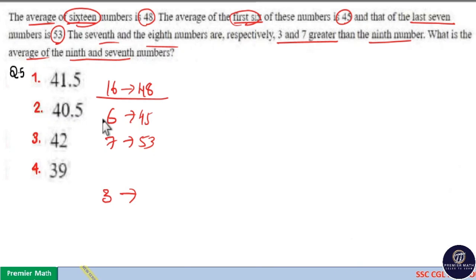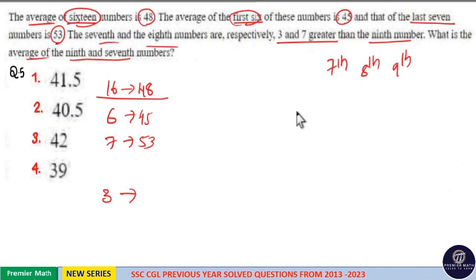This remaining 3 numbers mean between first 6 and last 7. Remaining numbers are after 6, it is 7, 8 and 9th number. So remaining 3 numbers are 7, 8 and 9.